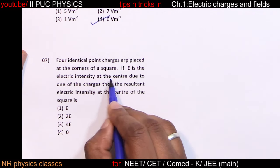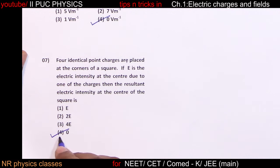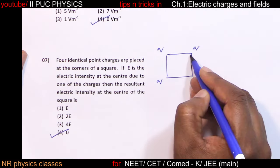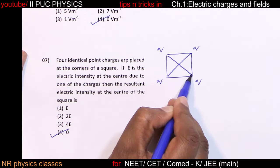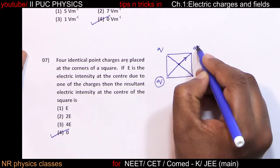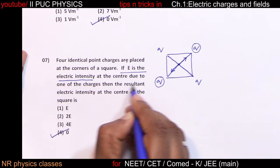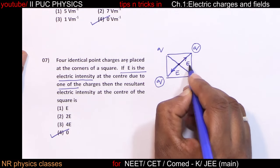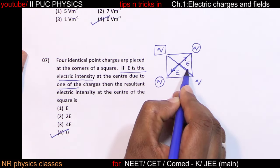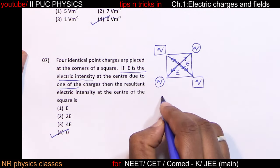Four identical point charges are placed at the corners of a square. The resultant electric intensity at the center is zero. At the center (intersection of diagonals), because of each charge the electric field points away. Fields due to opposite charges are equal and opposite and cancel. The resultant electric field is zero.